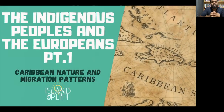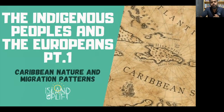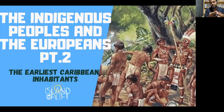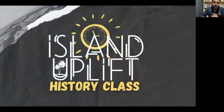This has been Part 1 of our study on the indigenous peoples and the Europeans. Tune in next class when we look at Part 2, where we will zoom in on the earliest Caribbean inhabitants — focusing on knowing more about the Mayans, the Taino, and the Kalinago. This has been a history class — see you in the next one. Class dismissed.